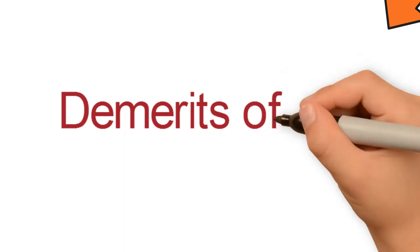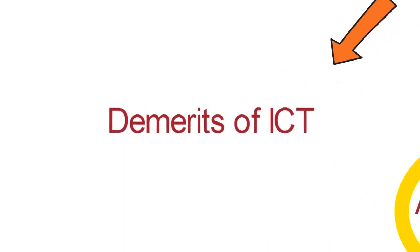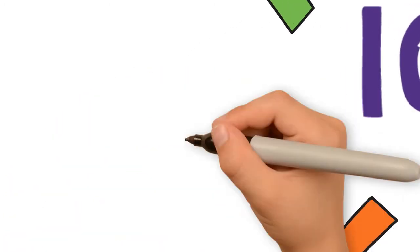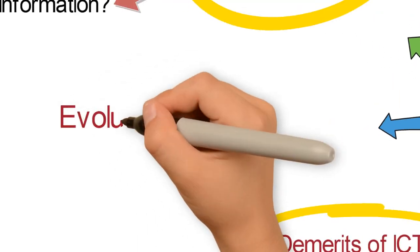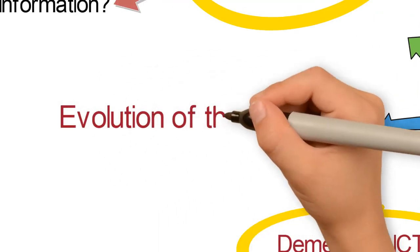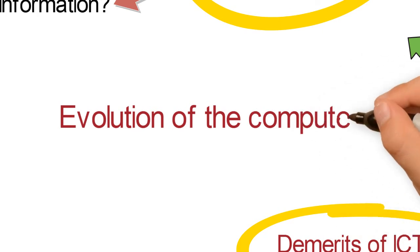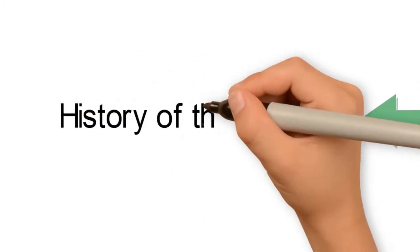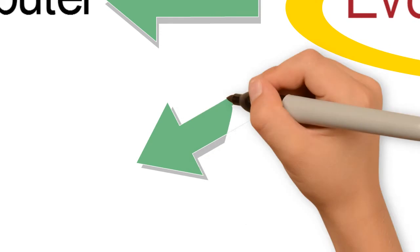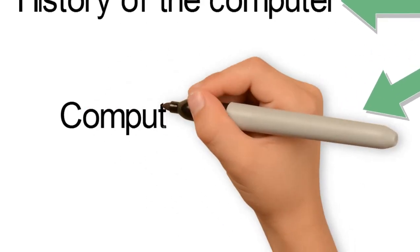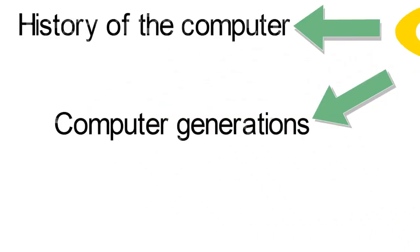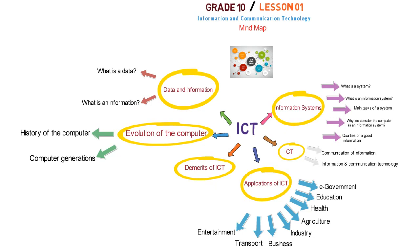The next topic is the demerits of ICT. The second major topic is the evolution of the computer, starting with computer generations.